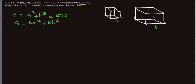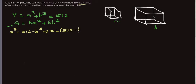We want to maximize the total surface area, so we need to write A in terms of B. From the volume constraint, A³ = 512 − B³, which means A as a function of B is the cube root of (512 − B³), written as (512 − B³)^(1/3).